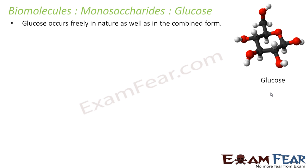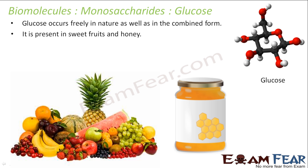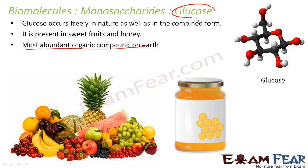Glucose occurs freely in nature as well as in combined form — it is found in sweet fruits and honey. It is the most abundant organic compound on Earth. When we are tired or ill, we take glucose for instant energy because our body does not need to break it down further. It is the smallest form of carbohydrates — monosaccharides — that we use for energy.